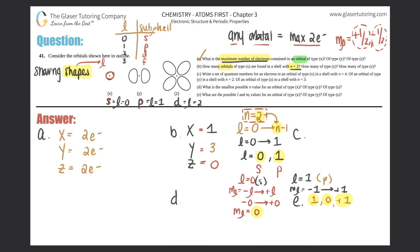Part c: write a set of quantum numbers for an electron in an orbital of type x in a shell with n=4. Quantum numbers are always written in the order n, l, ml, ms. For type x (s orbital) in n=4: n=4, l=0 (s always has l=0), ml=0 (the only option for l=0), and ms is either +½ or −½ — you can pick either and both are correct.